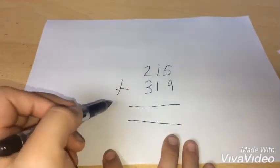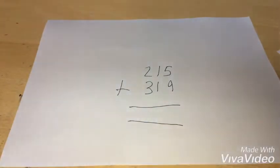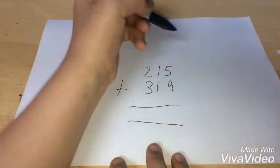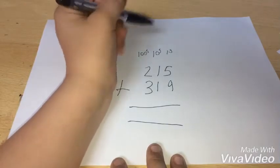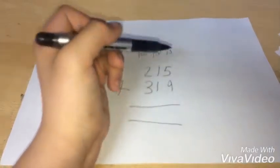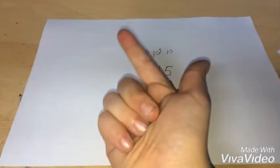Okay, so now we start with the ones column, which is this column. And we did five add nine: ten, eleven, twelve, thirteen, fourteen.